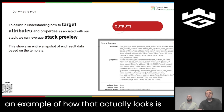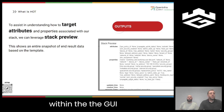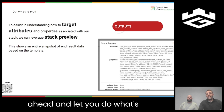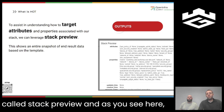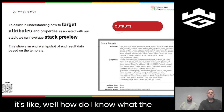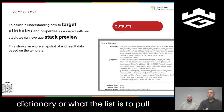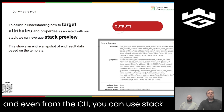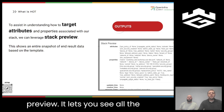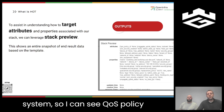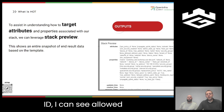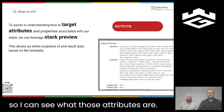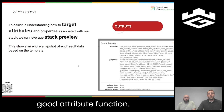Within the OpenStack GUI, using the stack preview function — available both in the GUI and CLI — you can see all the attributes associated with your system: QoS policy ID, allowed address pairs, fixed IPs, and more. This lets you know which attributes are available so you can then call them with the 'get_attr' function.